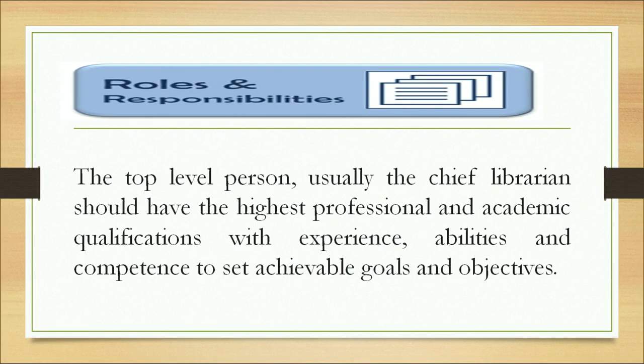The top level persons — usually the chief librarian — should have the highest professional and academic qualification with experience, and the ability and competence to set achievable goals and objectives. He should have the ability to set targets to be obtained in a particular period. The top level authority is an experienced person who should be able to complete all required work in the library in an authoritative way and enforce discipline.